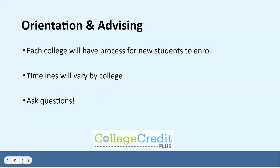Every college will have an orientation and an advising process for students who are admitted to their CCP program. For some colleges, this might occur in the spring for the following school year, while other colleges might not schedule your fall classes until late summer. That's why it's really important that you keep in touch with both your high school and the CCP folks to make sure that you have everything well organized and working together.